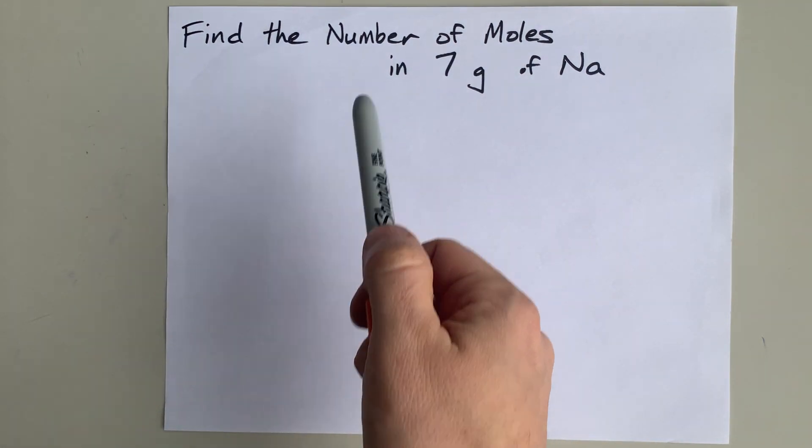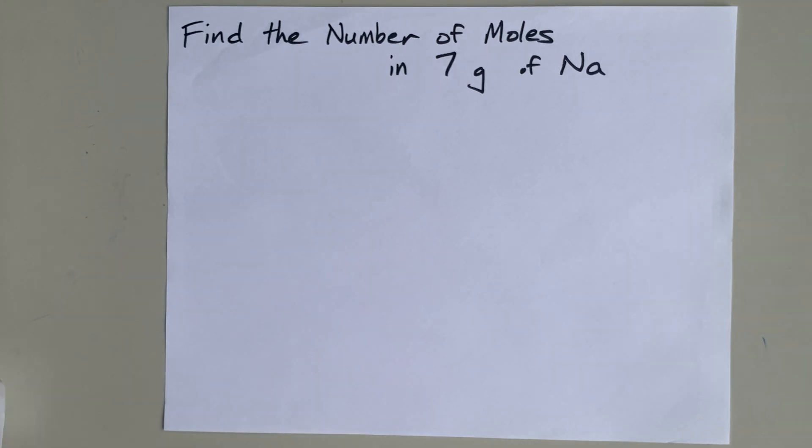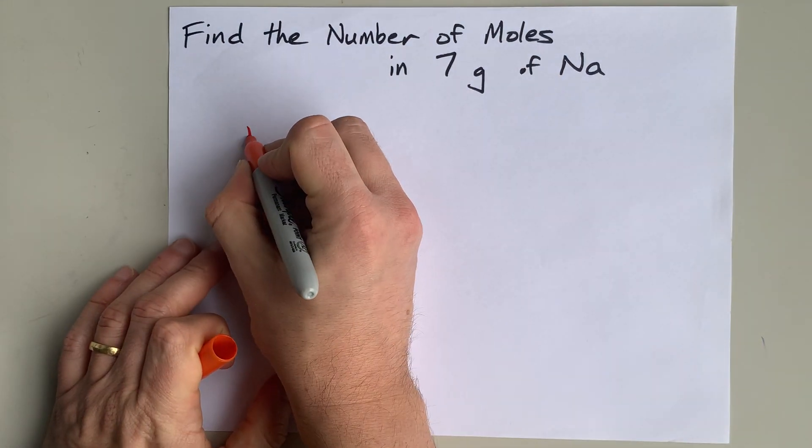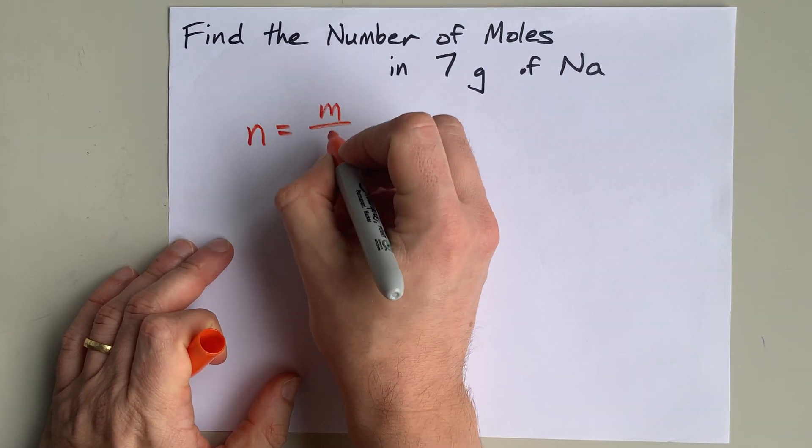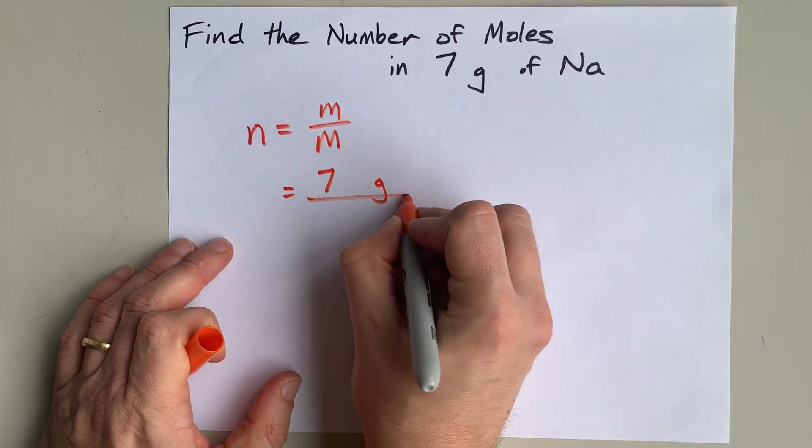I had a request for the number of moles in 7 grams of sodium. Well, the formula for moles is mass divided by molar mass, and the mass that I was given was 7 grams.